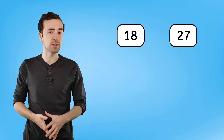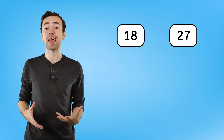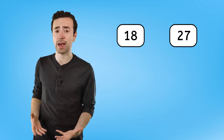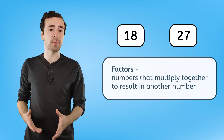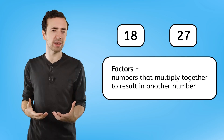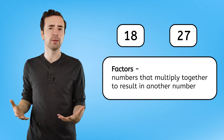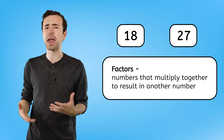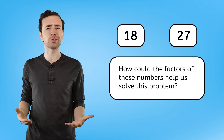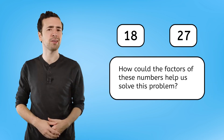In the last lesson, we learned about prime and composite numbers. I noticed that 18 and 27 are both composite, which means they have more than two factors. Remember, factors are numbers that multiply together to result in another number. Do you have any ideas about how their factors could help us figure this out?